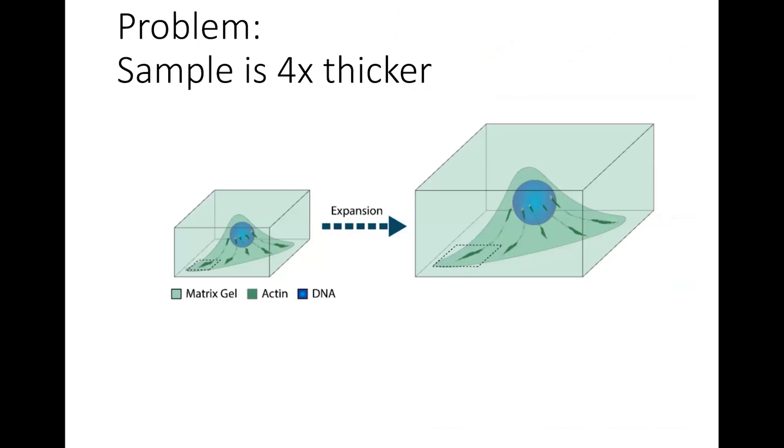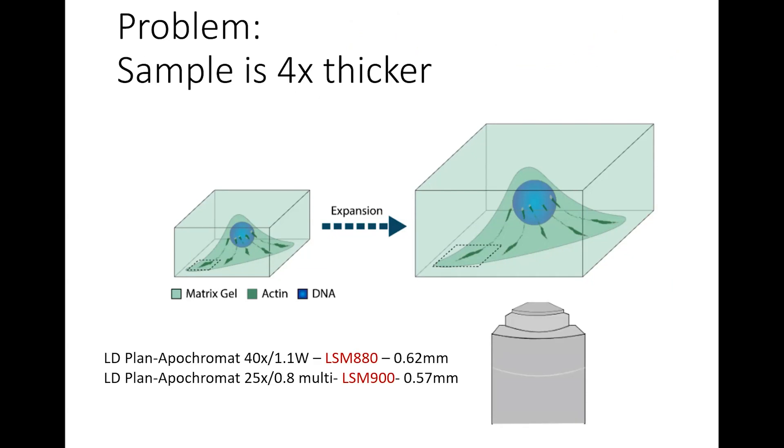Another problem that you'll run into is the expansion is in all directions, so now your sample is four times thicker. One of the keys to this is to use a long working distance objective. At HCBI, we have a 40x 1.1 long working distance water on the LSM 880, and we have a 25x 0.8 multi-immersion lens on the LSM 900 that both would work for this. Another thing that you need to make sure is if you're doing a monolayer of cells, it's key to remember to be able to track which side is up because you will not be able to image all the way through the gel.